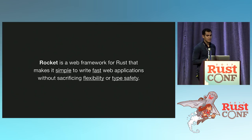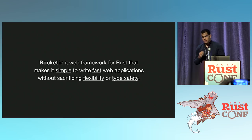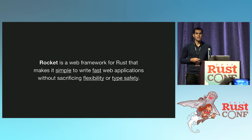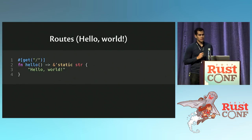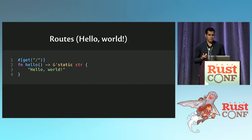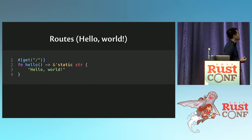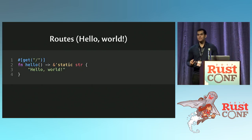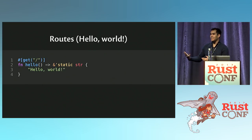Rocket is a web framework for Rust that makes it simple to write fast web applications without sacrificing flexibility or type safety. Let's take a look at what a Rocket application looks like — this is Hello World. It's four lines. This is really all you write, with the caveat that you need a main function. I just think it's so cool that you can write this in Rust — a C successor — and it looks like this.